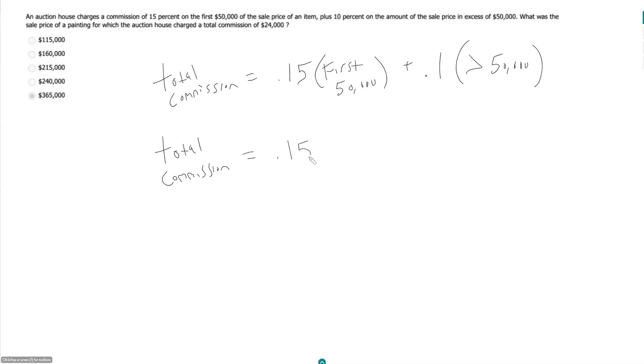So 0.15, assuming that our price was over $50,000, and so we use all this commission here, and based on our answer choices, all of them over $50,000, you're going to use that whole thing.